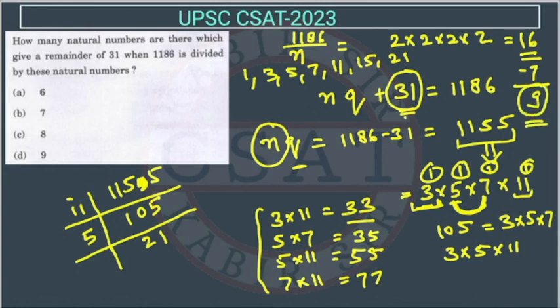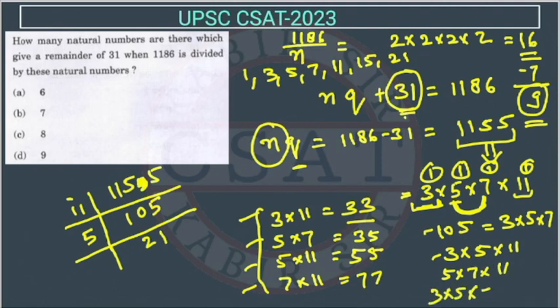Counting the valid factors here: 1, 2, 3, 4, 5, 6 — and the remaining possibilities are 5×7×11, 3×7×11, and 3×5×7×11. You can do it either way. The answer is option D, which is 9.